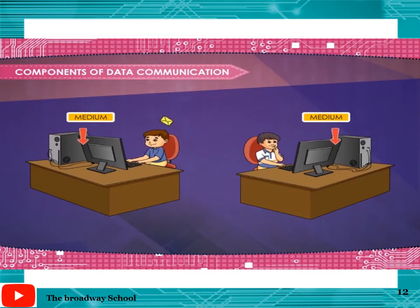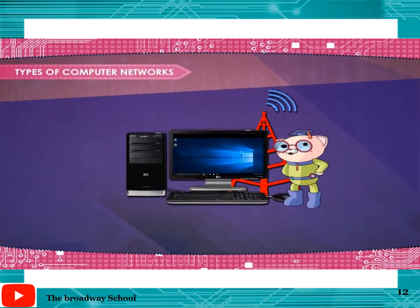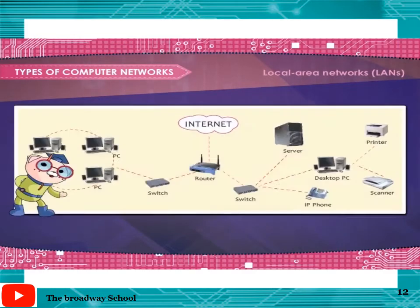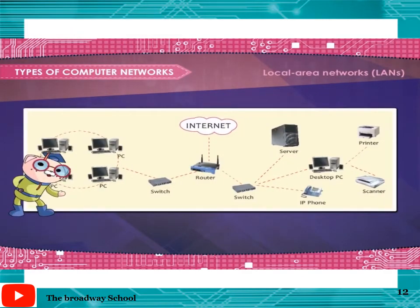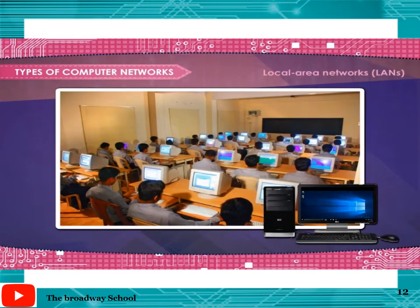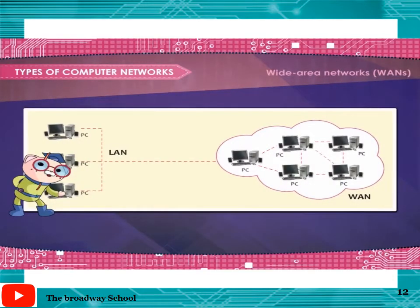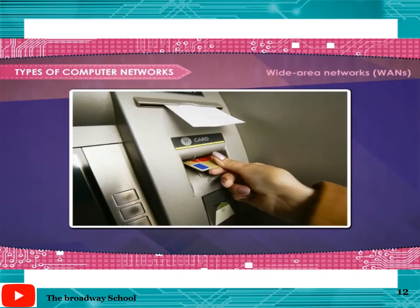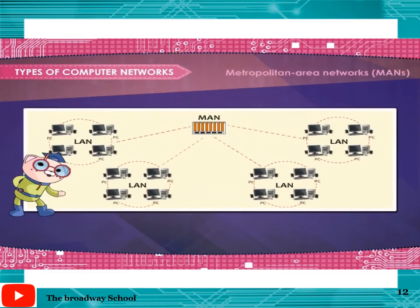Types of computer networks. There are many types of computer networks including: Local Area Networks or LANs, where the computers are geographically close together, like connected in the same building — for example, the network in your computer lab. Wide Area Networks or WANs, where the computers are farther apart and are connected by telephone lines or radio waves — for example, ATMs all over. Metropolitan Area Networks or MANs, a network designed for a town or city.